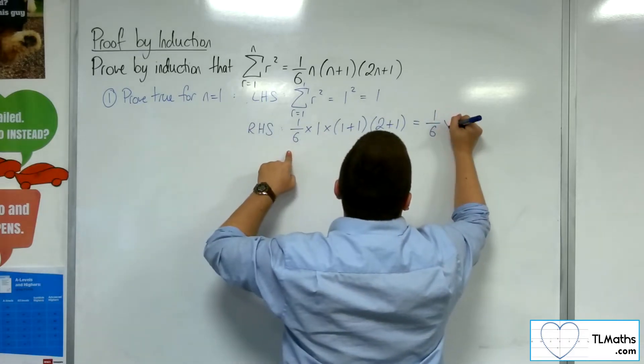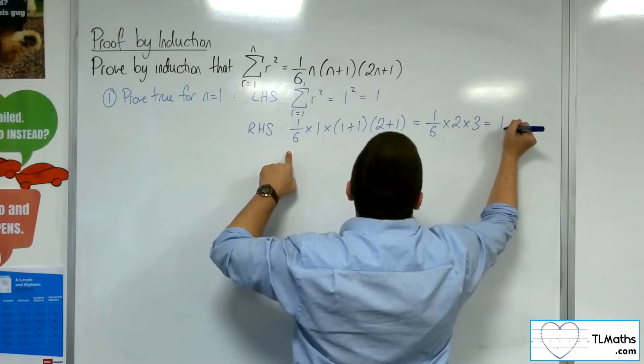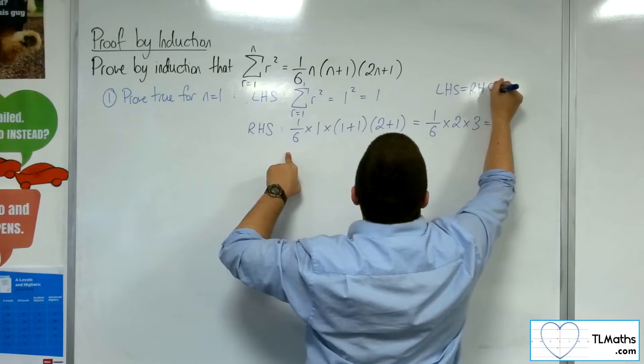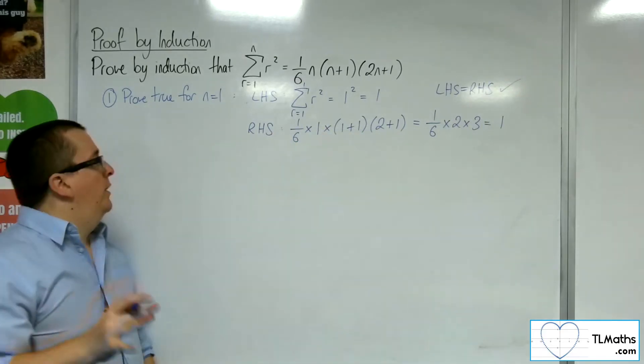So, 1/6 times 2 times 3 which is 1. The left-hand side is equal to the right-hand side and so it is proved for n equals 1. It works for n equals 1.